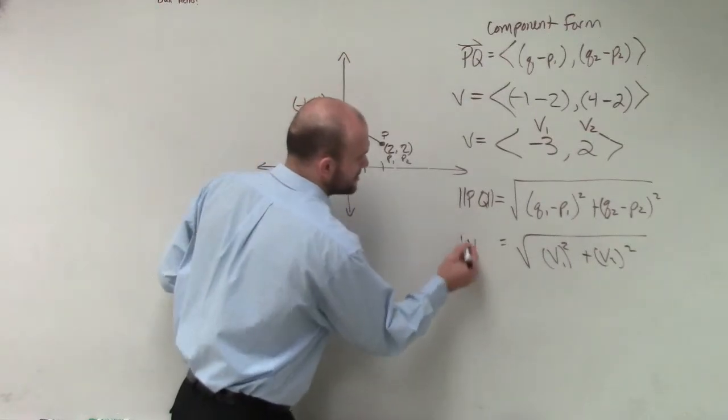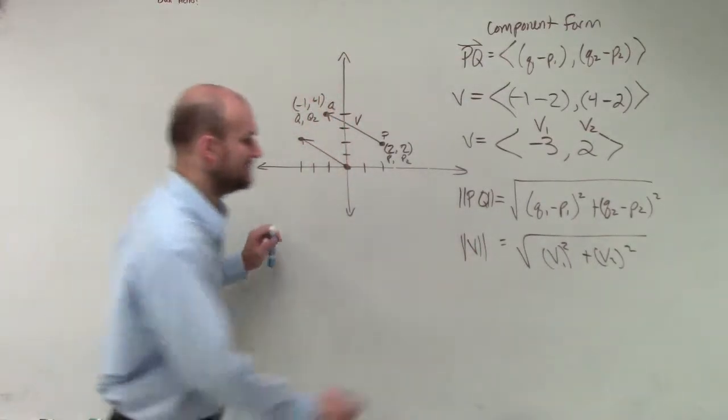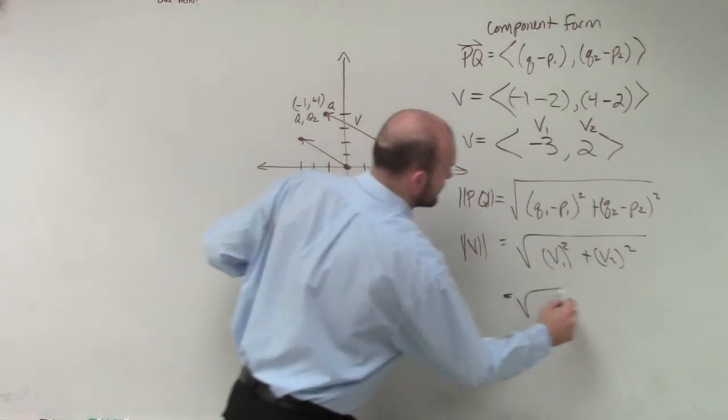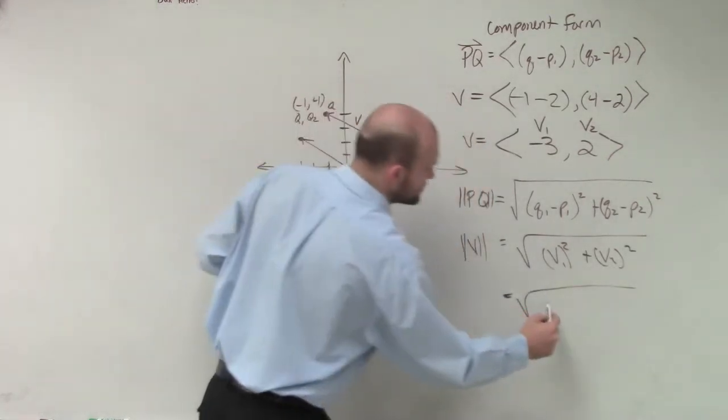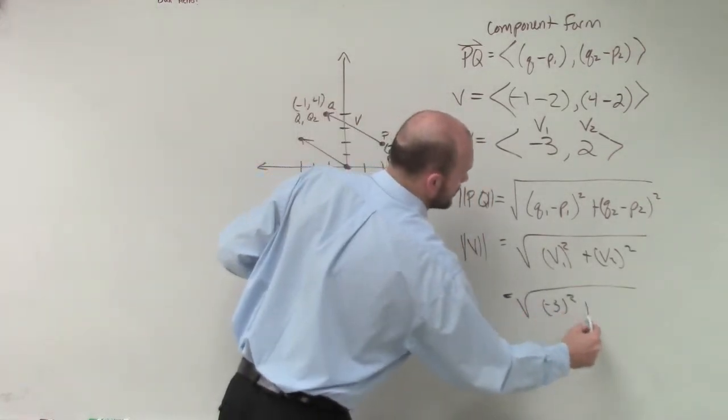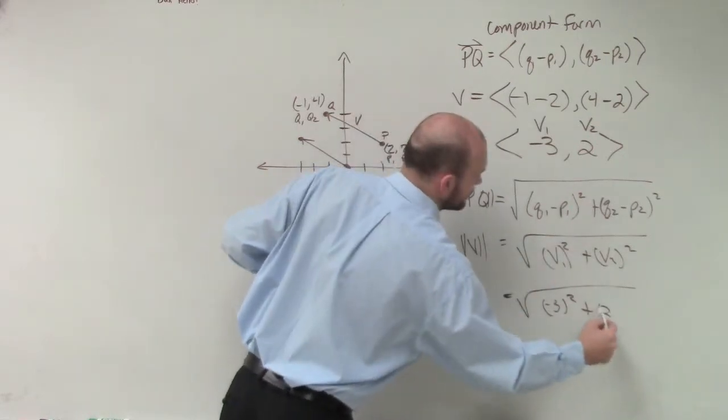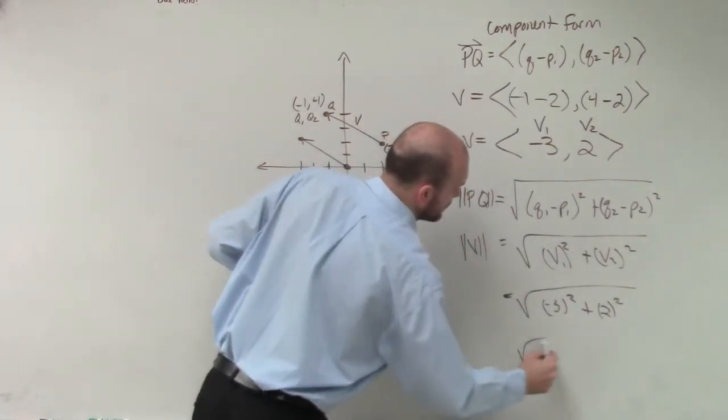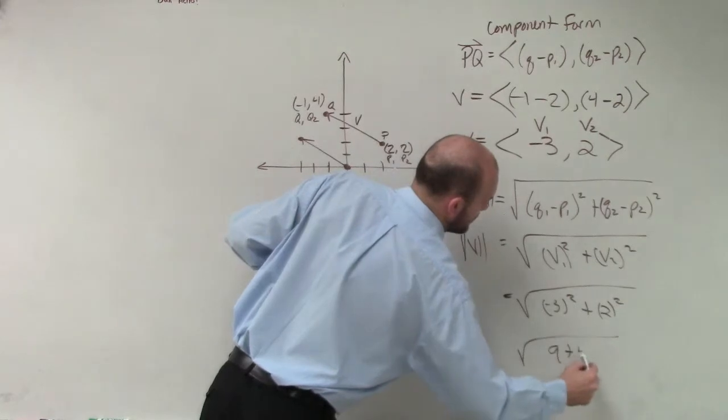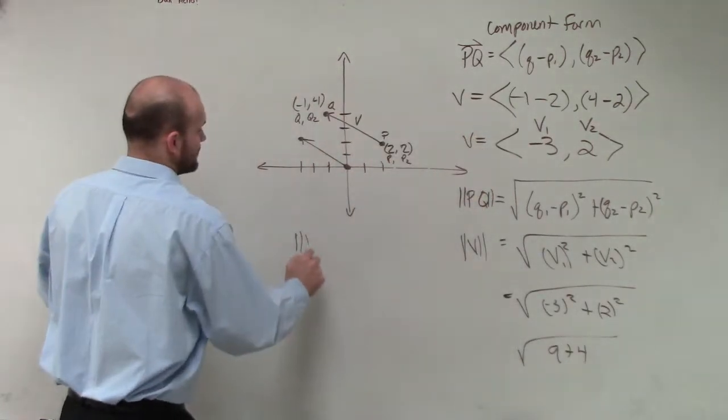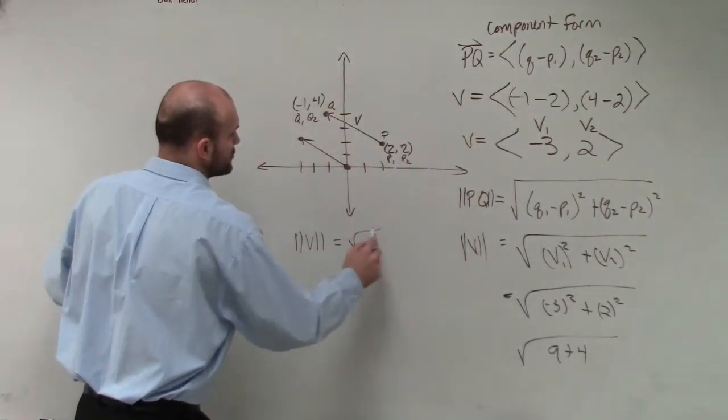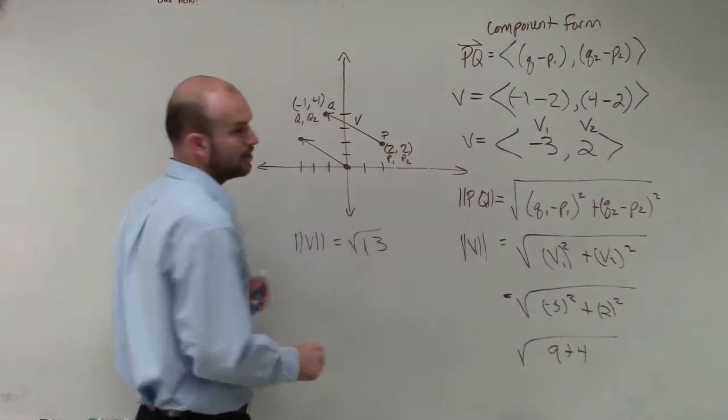Which we could also just say, rather than doing P over Q, we can just say the magnitude of V. Well, now that's going to be the square root of negative 3 squared plus 2 squared. So I could say that the magnitude of V is going to equal the square root of 13.